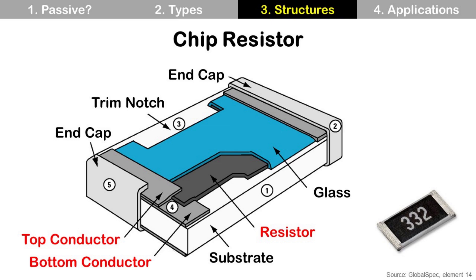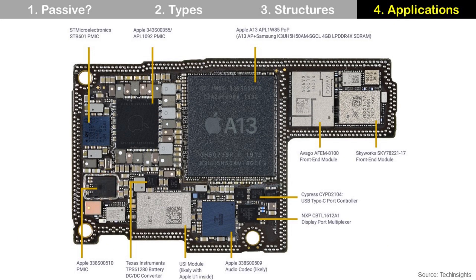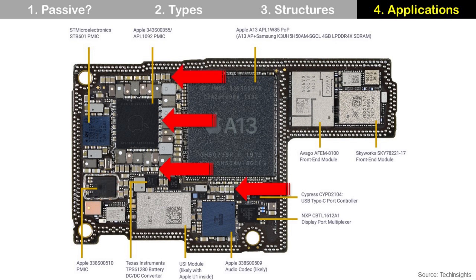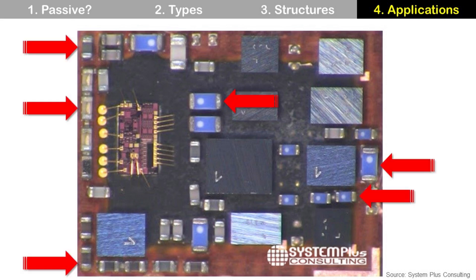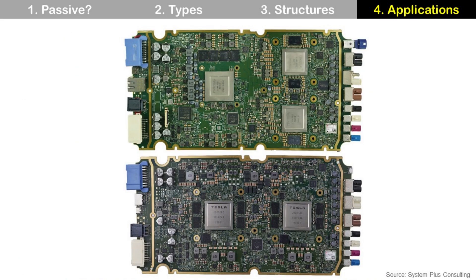Where can you find these chip capacitors, chip inductors, and chip resistors? This is the board of Apple iPhone, and you can easily find them like this. This is a SiP (system in package) after removing the mold compound, and you can see many passive components as well. This is the board of a Tesla electric car, and these are passive components.